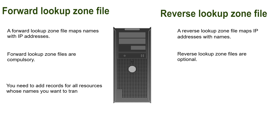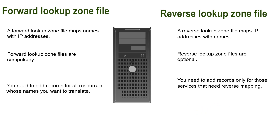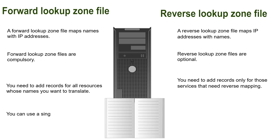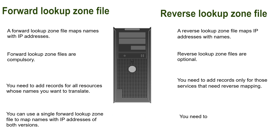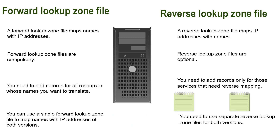If you do not want to provide reverse lookup for a domain, you do not need to create a reverse lookup zone file for it. There are two versions of IP addresses: IPv4 and IPv6. You can use a single forward lookup zone file to map names with IP addresses of both versions. But you cannot use a single reverse lookup zone file for both versions — you need separate reverse lookup zone files for each. You only need to create a reverse lookup zone file for the IP version your domain uses.